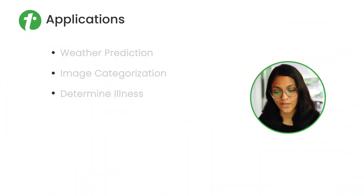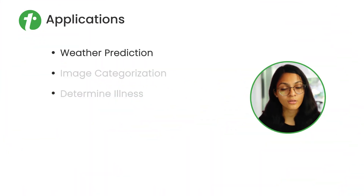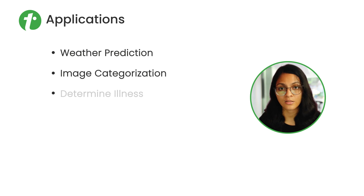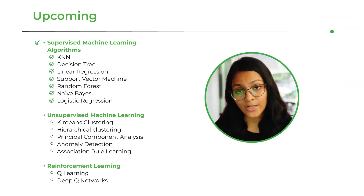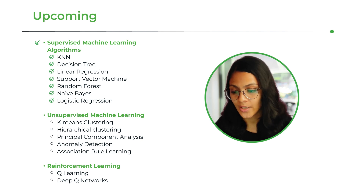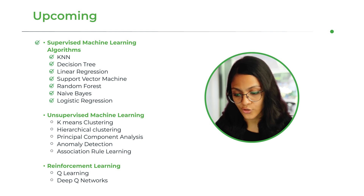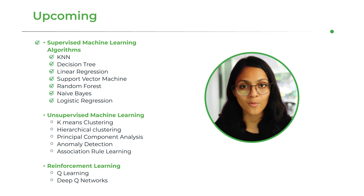What are the applications of Logistic Regression? We use it in weather prediction — like whether it will rain or not, sunny or not — image categorization, such as whether a given picture is of a dog or cat, and also in determining illness. That was it for this video. We have already covered the first section of supervised machine learning algorithms, including supervised ML, KNN, decision tree, linear regression, support vector machine, random forest, Naive Bayes, and logistic regression. In the next video, we are going to talk about unsupervised machine learning algorithms. Stay tuned with Tutorials Point. Thanks for watching and have a nice day.